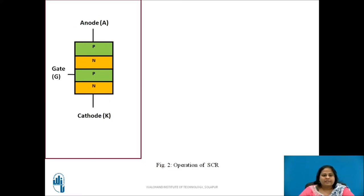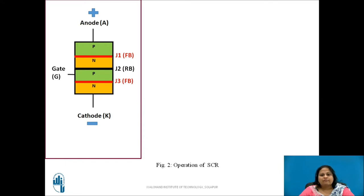Let us see the operation of SCR. Consider the state when the anode is made positive with respect to cathode. Two outer junctions J1 and J3 are forward biased. Middle junction J2 is reverse biased and thus forms a depletion layer which blocks the current from flowing through the device. Some small amount of leakage current flows through the device due to drift of mobile charges, but this current is insufficient to make the device conduct. Thus, even though the SCR is in forward biased condition, it does not conduct. This is known as the forward blocking state or OFF state of the device.